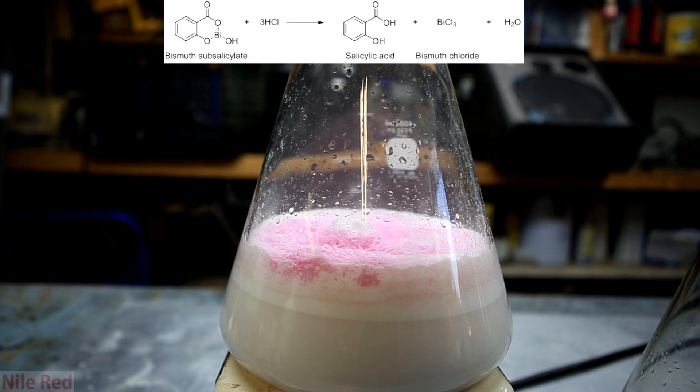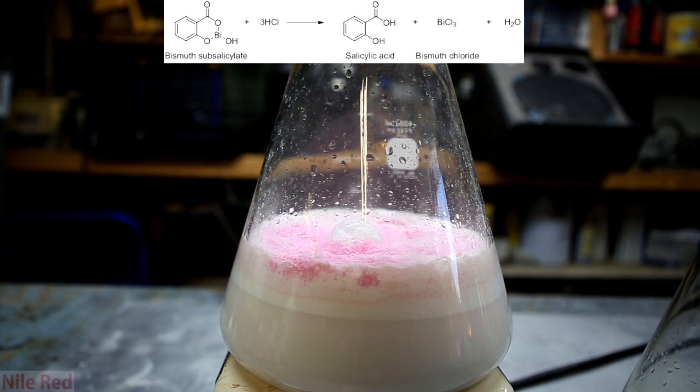In this reaction, we're reacting the active ingredient of Pepto-Bismol, which is bismuth subsalicylate, with hydrochloric acid to produce bismuth chloride and salicylic acid.